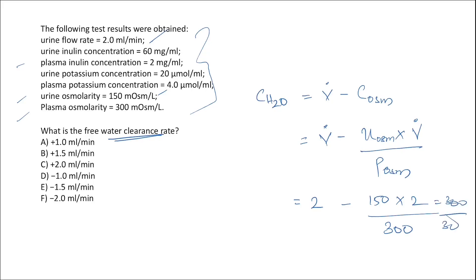This gives: 2 − (150 × 2 / 300) = 2 − (300/300) = 2 − 1 = 1 ml per minute. The correct choice is a positive free water clearance of +1 ml per minute, meaning the person has water excess in the body and free water is being excreted.